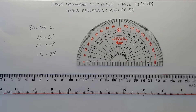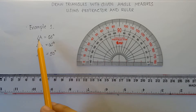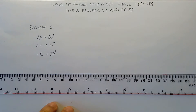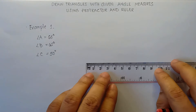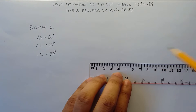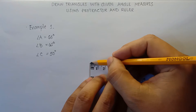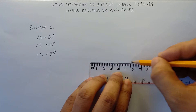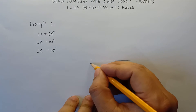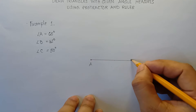We will have three examples for you to really understand this. Let's start with example number one. We have given angle A that is 65 degrees, angle B that is 65 degrees, and angle C that is 50 degrees. First thing you need to do is draw a horizontal line — any measure — and label this one as point A and this will be point B.